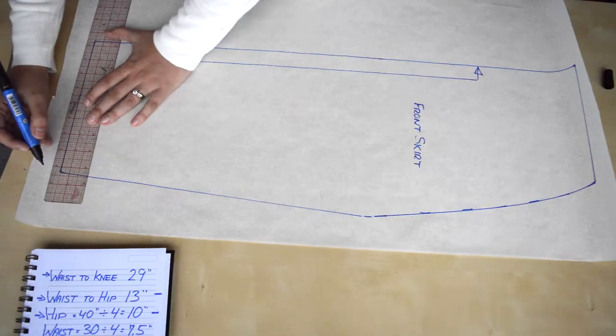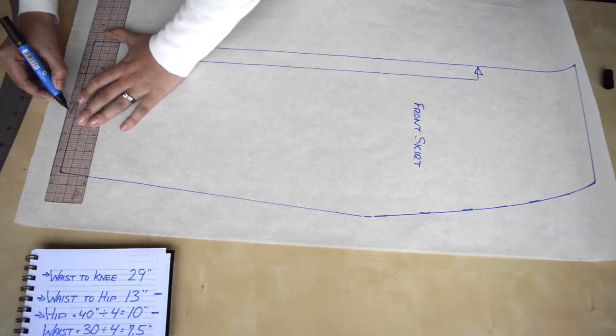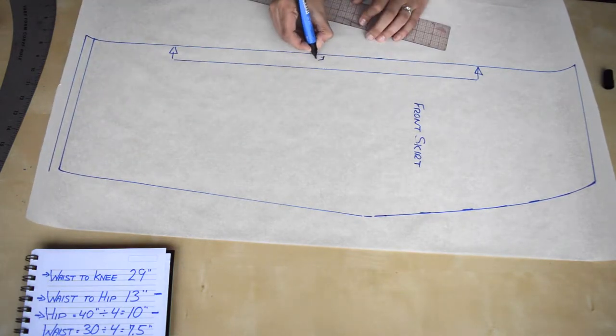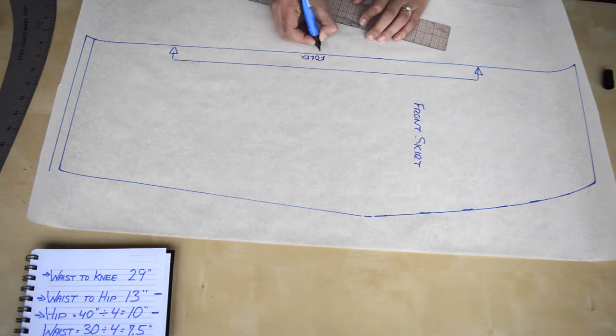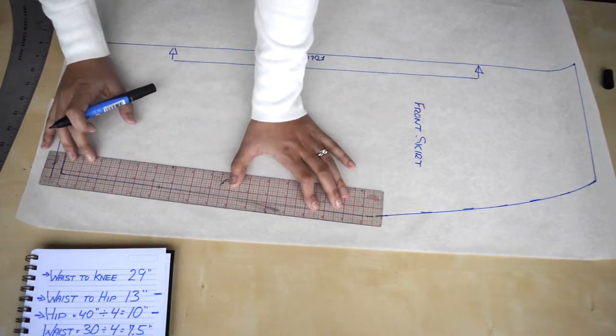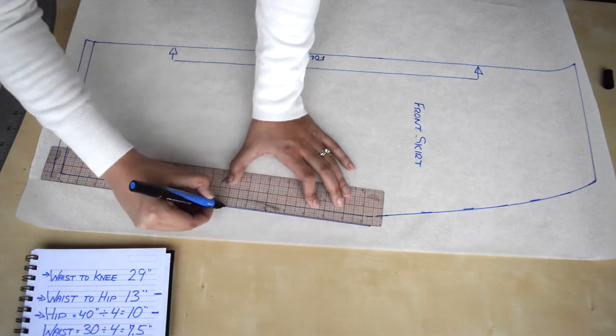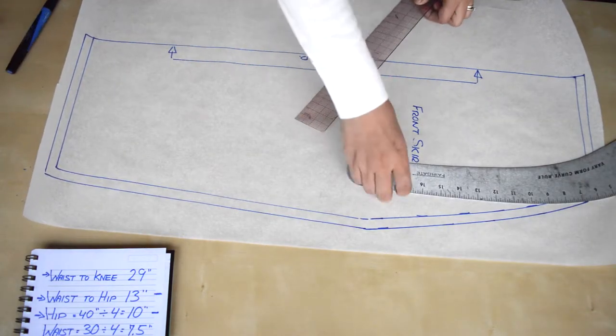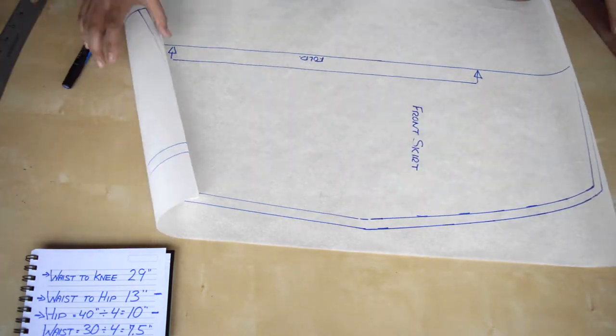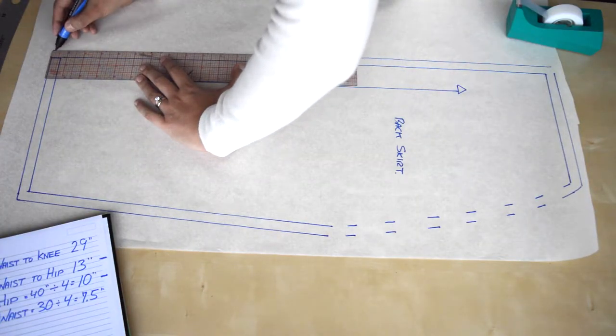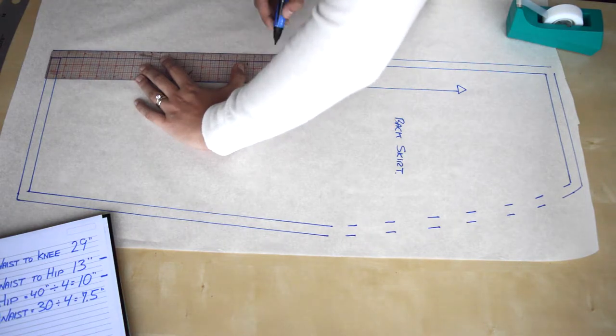My next step is to trace off two copies. One is going to be my front skirt and the next is my back skirt. I'm going to mark half inch seam allowance along all edges except for the front of my front skirt - you don't need seam allowance there because you're going to cut it on fold. So the front and back are going to look exactly the same except for the back is going to have seam allowance down the center so that you can sew that seam closed.